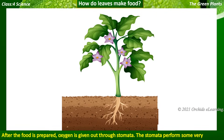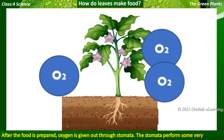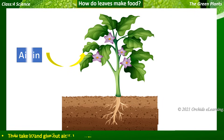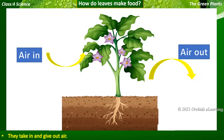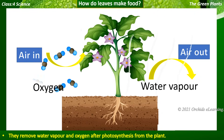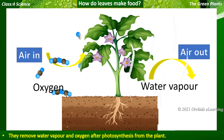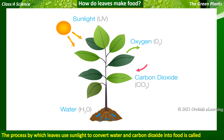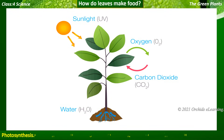After the food is prepared, oxygen is given out through the stomata. The stomata perform some very important functions for the plant: they take in and give out air, and they remove water vapor and oxygen after photosynthesis from the plant. The process by which leaves use sunlight to convert water and carbon dioxide into food is called photosynthesis.